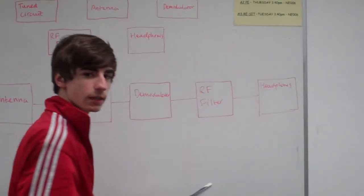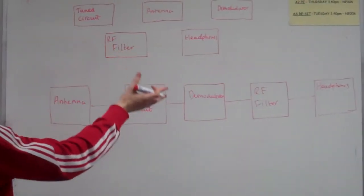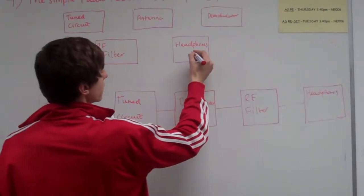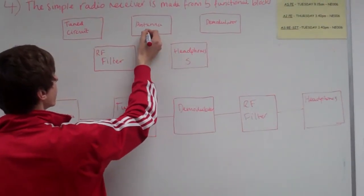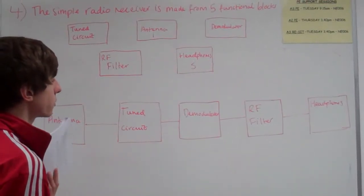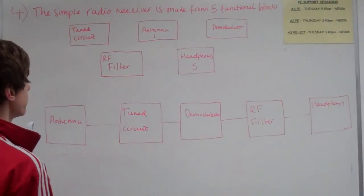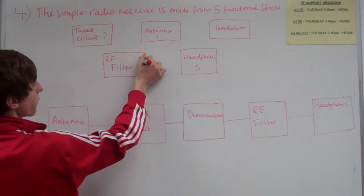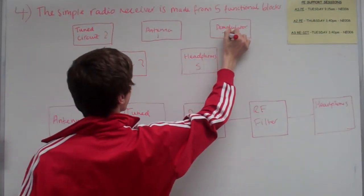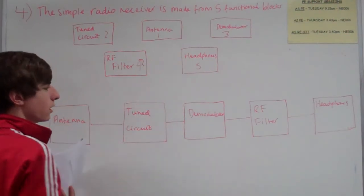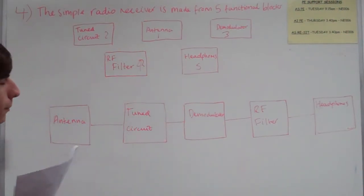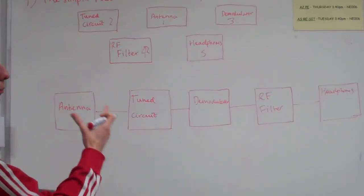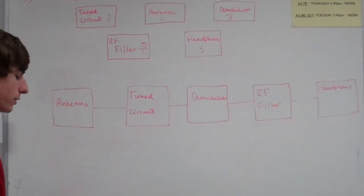In the actual exam, what you can do is as soon as you've read it, you can say, right, there are five here, and you can number them. That's number five, that's number one. Then you can start thinking to yourself, what's number two, what's number three, and what is number four? Start building it up. And if you're not sure for one or two of them, you can work out just by process of elimination.